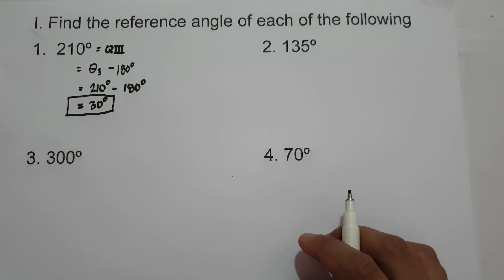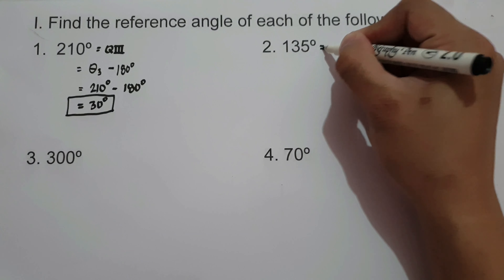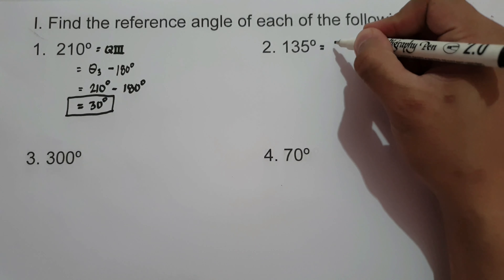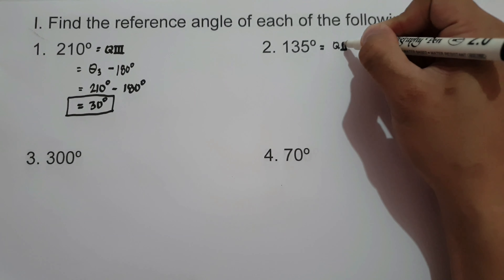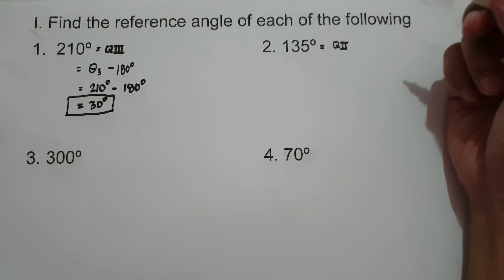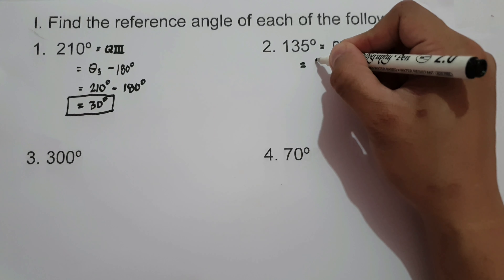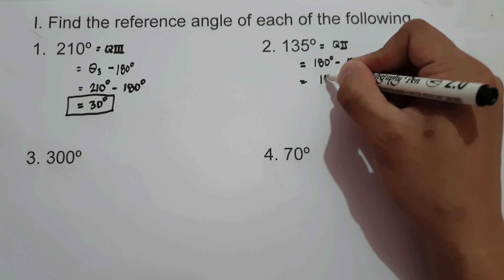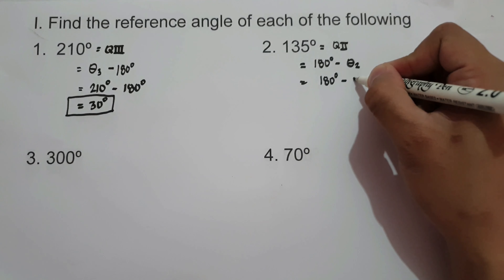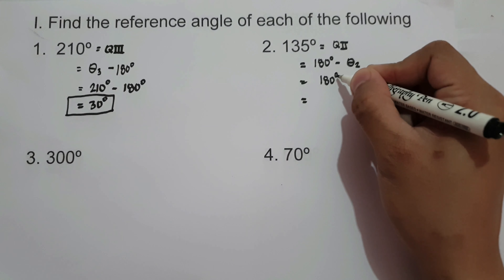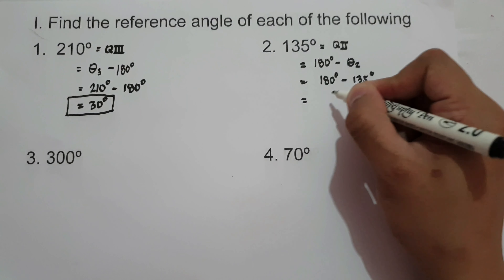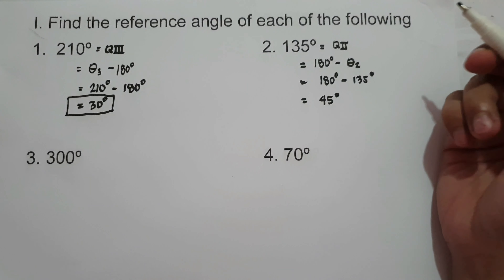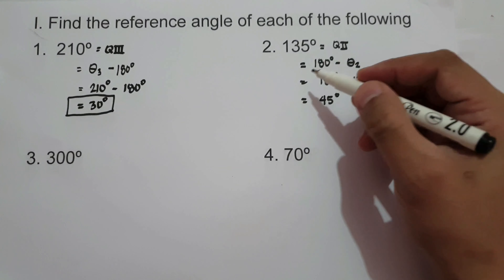What about number 2? We have 135°. First, let us locate where 135° is — it is in quadrant 2, between 90° and 180°. The reference angle in quadrant 2 is 180° minus the given angle. So we have 180° minus 135°, which is 45°. Therefore, the reference angle of 135° is 45°.